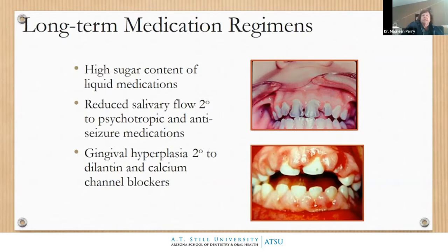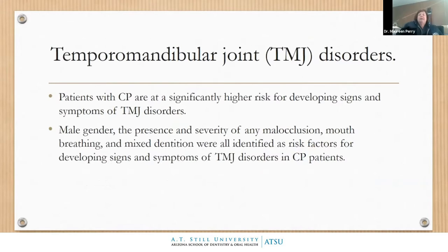One thing we might not think about is TMJ disorders. We should be evaluating patients with neuromuscular disorders for TMJ disorders, because patients with CP are at higher risk for signs and symptoms of TMJ. The malocclusion, mouth breathing, mixed dentition, and constant muscle activity create the perfect storm for TMJ disorders. Because patients have so many other things going on, they may not be the ones to complain about TMJ — so it really behooves us to do a good TMJ exam.